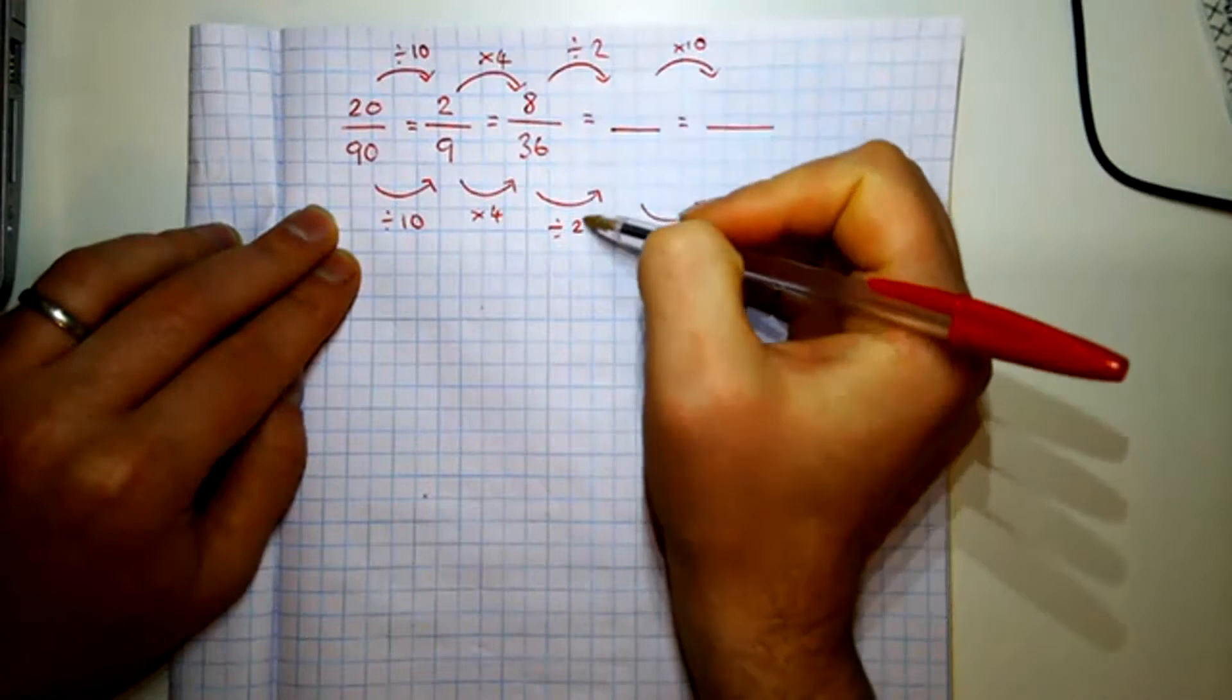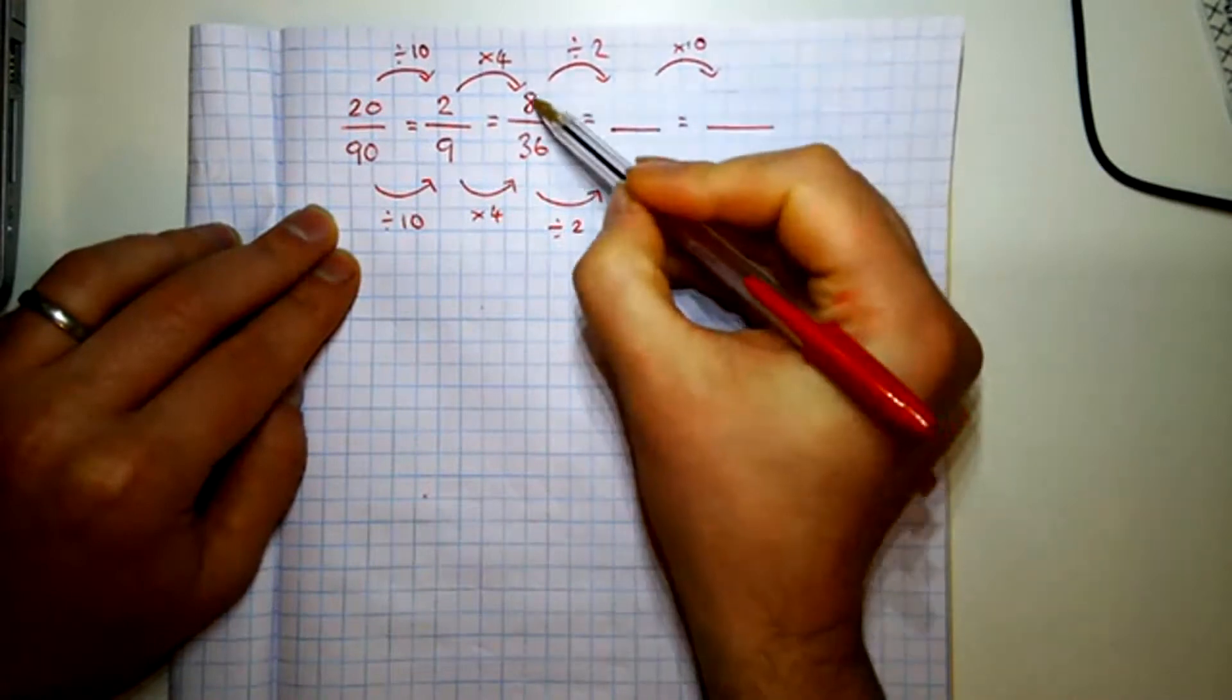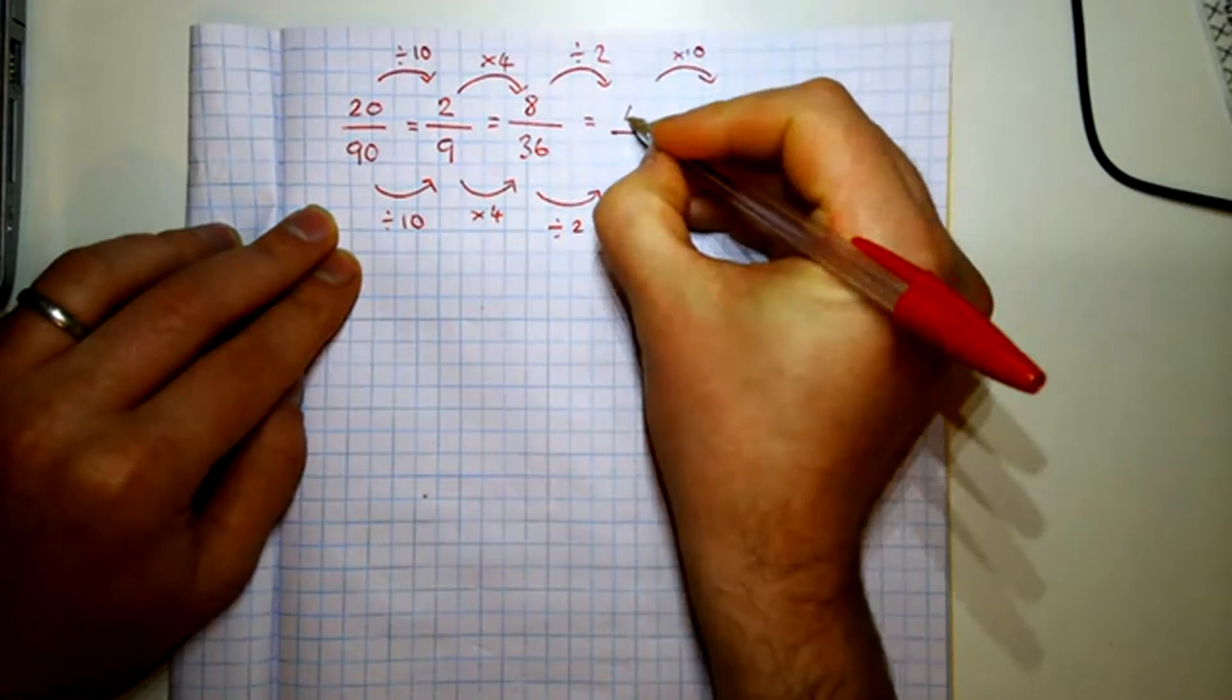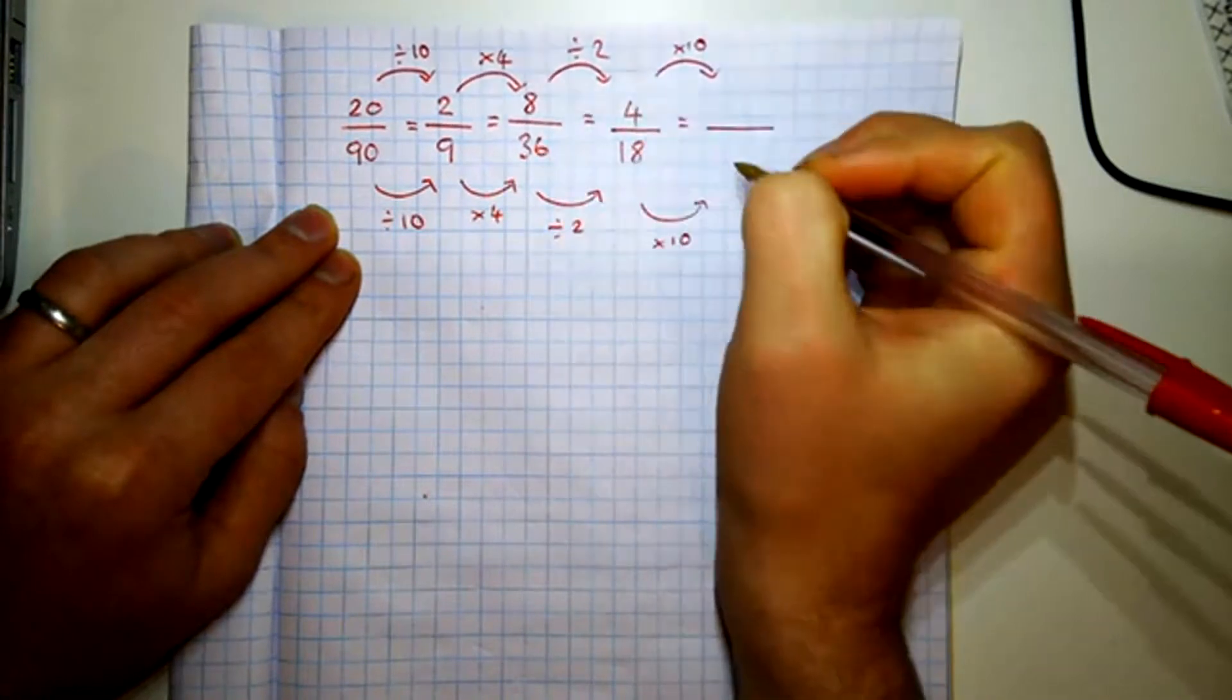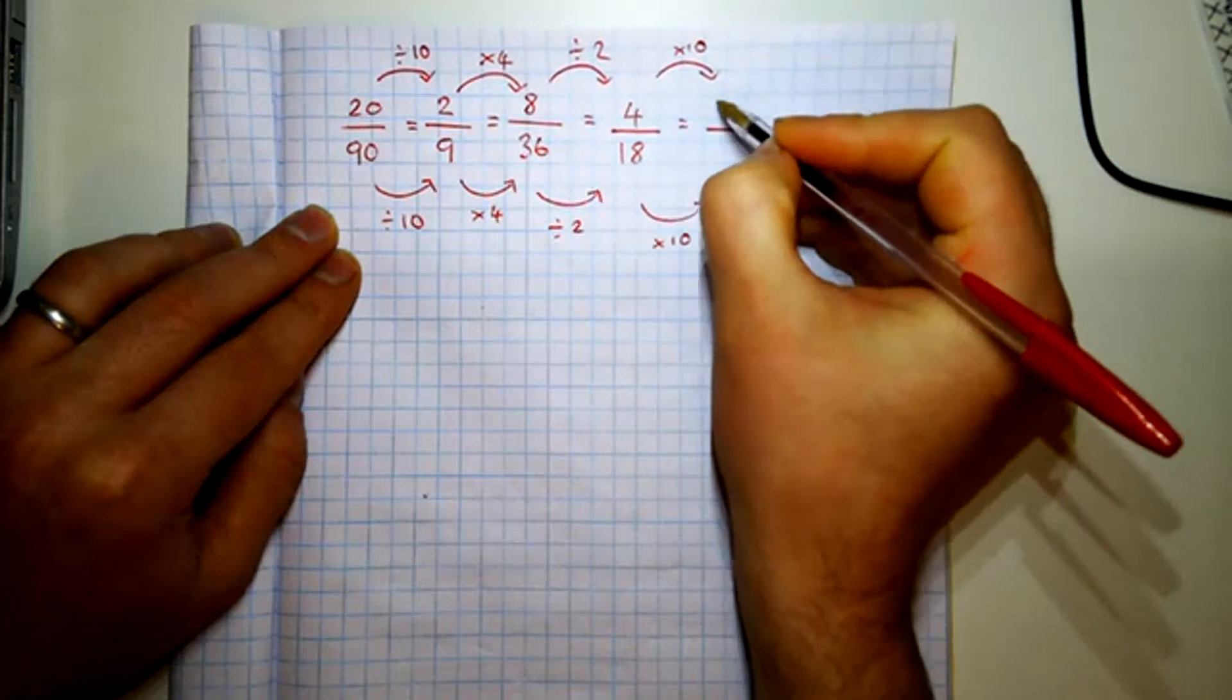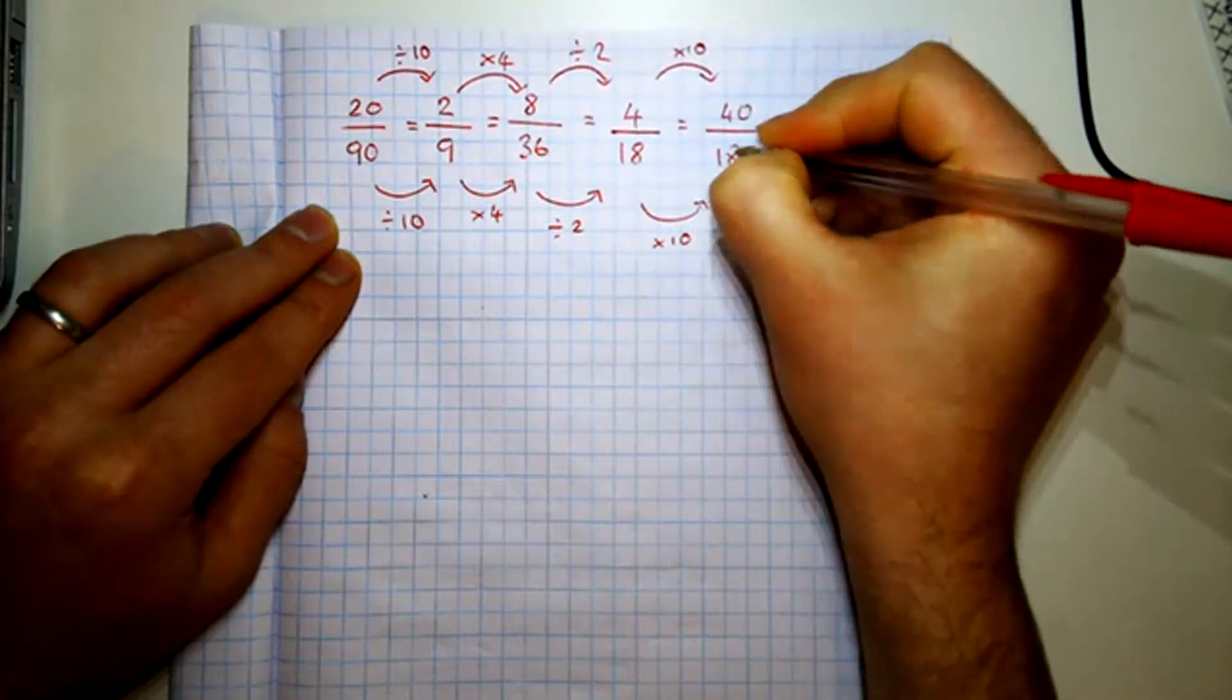Then you might be told what to do to find the whole equivalent fraction. So this is telling me to divide by 2. I get 4, I get 18 and it's an equivalent fraction. And one last one I could do, I could times to get 40 over 180.